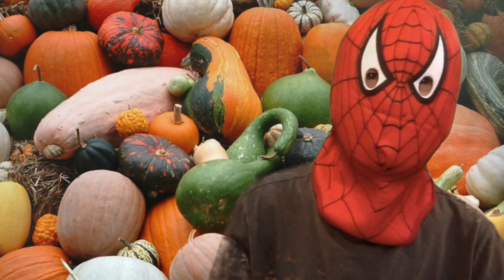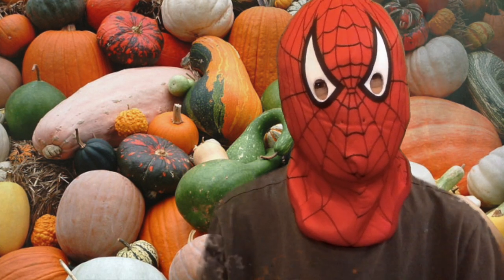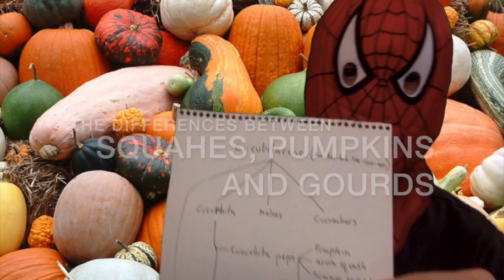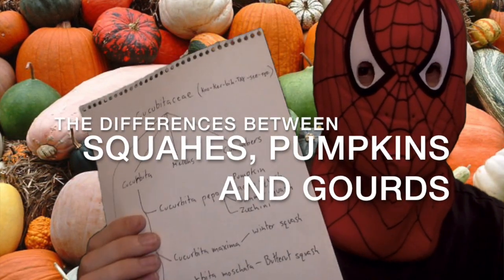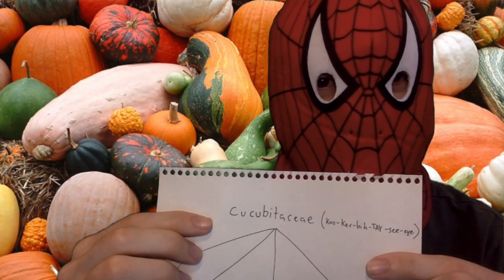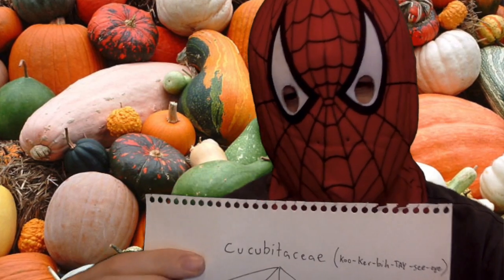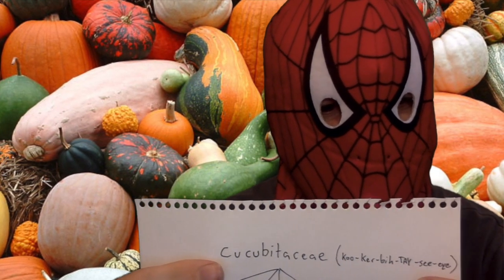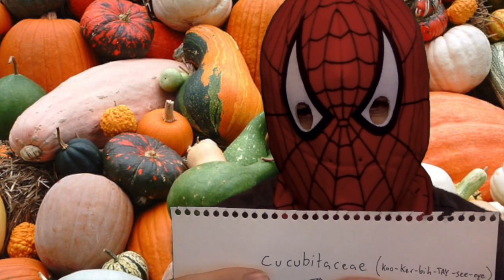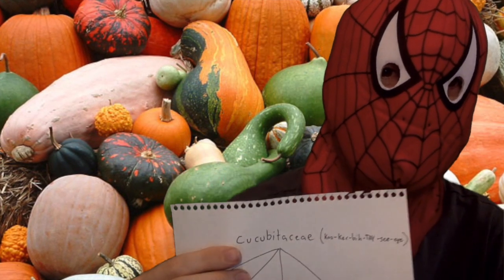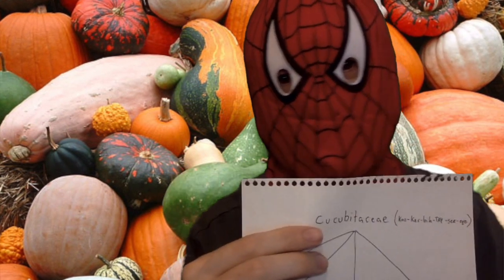I'm your host the Spider-Man, and today I would like to tell you about the differences between squashes, pumpkins, and gourds. So let's start at the beginning — if it's a squash, a pumpkin, or a gourd, it is called Cucurbitaceae. That is the family under which all pumpkins, squash, and gourds exist.